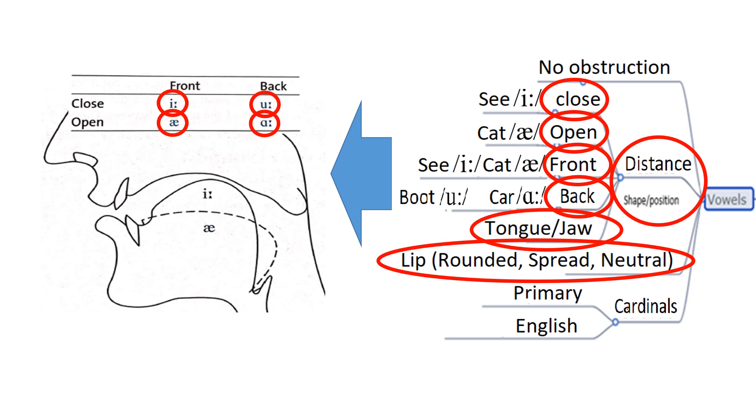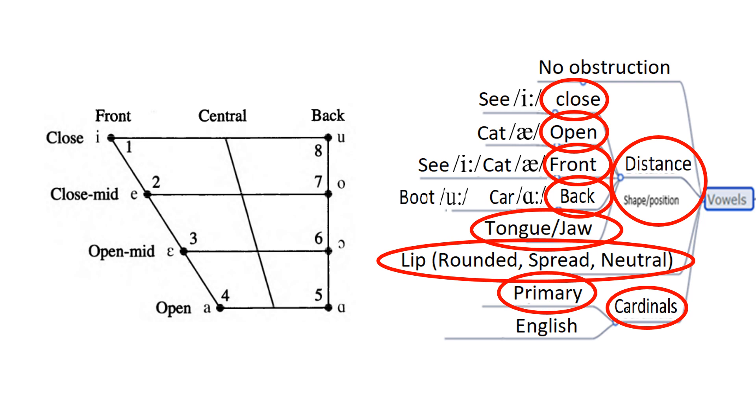The lips can also take part in the pronunciation of vowels, which can be rounded as in the vowel sound in boot, spread as in the vowel sound feet, or neutral as in the vowel sound in get. Cardinal vowels are vowels that do not belong to any particular language. They are used as a standard reference system. The sounds that appear on this quadrilateral are called primary cardinal vowels.